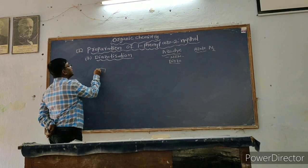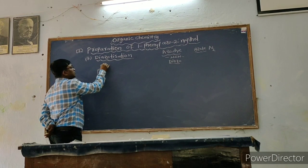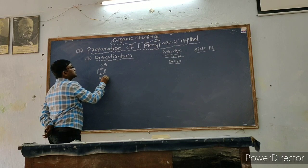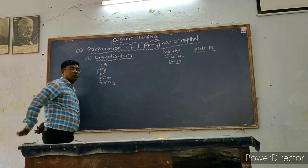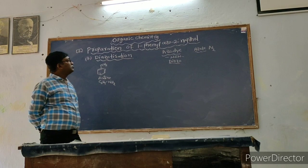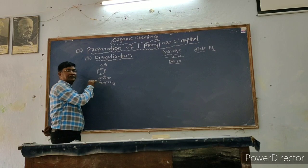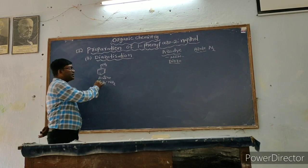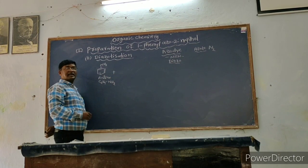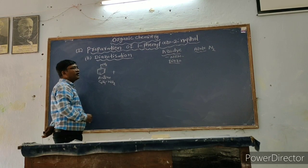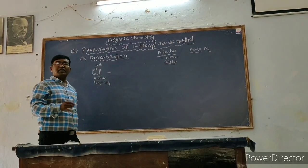We have to react aniline. Aniline means if we attach NH₂ to benzene that becomes aniline, and its formula is C₆H₅NH₂. To form the diazonium salt, we treat an aromatic primary amine — here we are taking aniline — and it has to be reacted with nitrous acid.